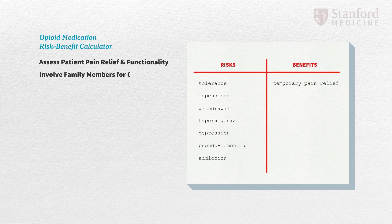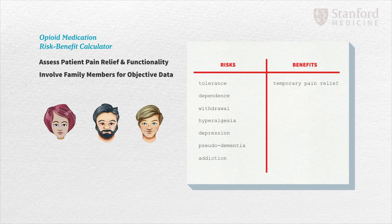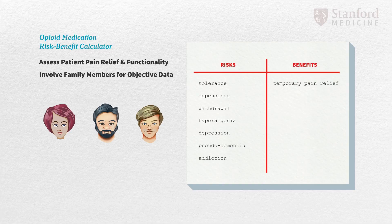Involve family members in the risk-benefit calculator. Patients on chronic opioid therapy often lose the ability to assess their own responses to opioids because of the effects of opioids on the brain. Patients often overestimate the efficacy of these drugs and underestimate their adverse effects. Patients, family members, and significant others provide an important objective data point on how the patient is actually doing on opioids.